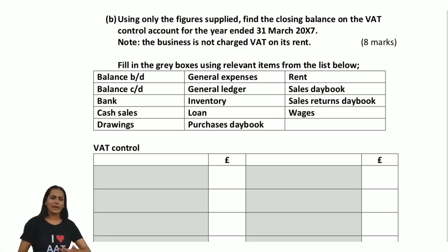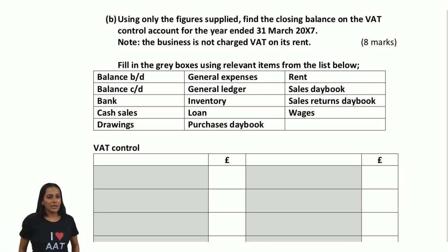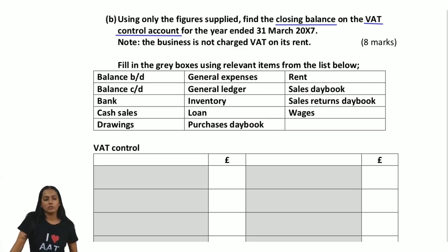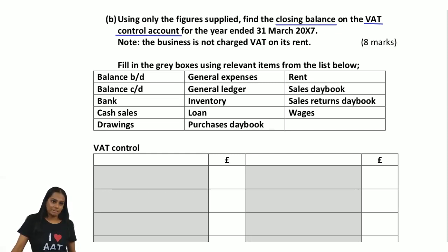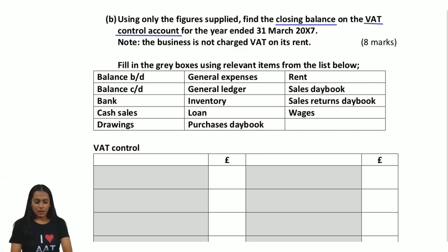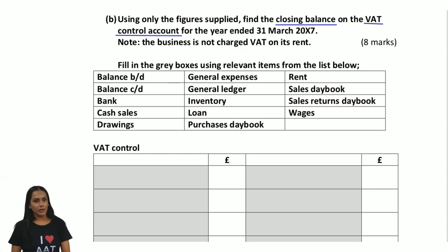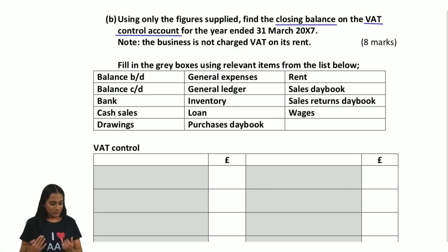Using only the figures supplied, find the closing balance on the VAT control account for the year ended 31st March 2017. Note that the business is not charged VAT on its rent. I need to build the VAT control account — the closing balance will show either amounts payable to the authorities or amounts refundable, and I don't know the answer until I build it up.